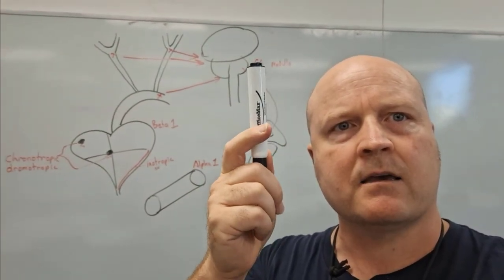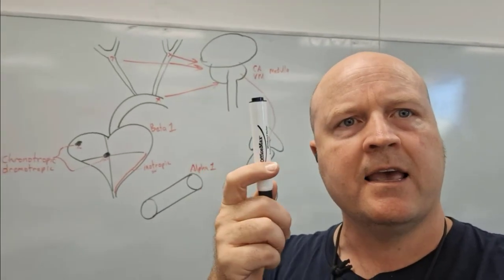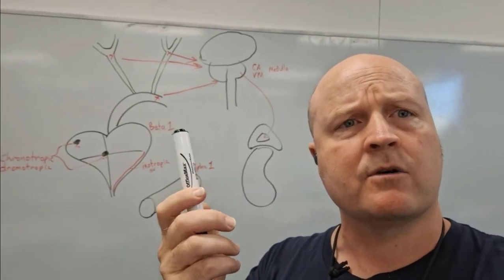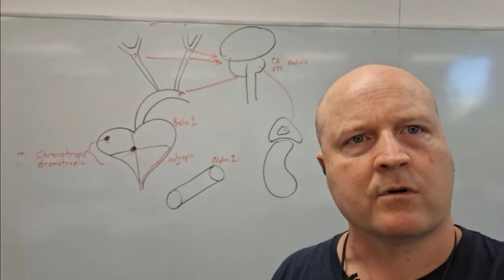So cardiac acceleratory center sounds like it's going to go to the heart to increase it, and vasomotor, vaso, blood vessels, motor causing to move. That's a bit of a hint.